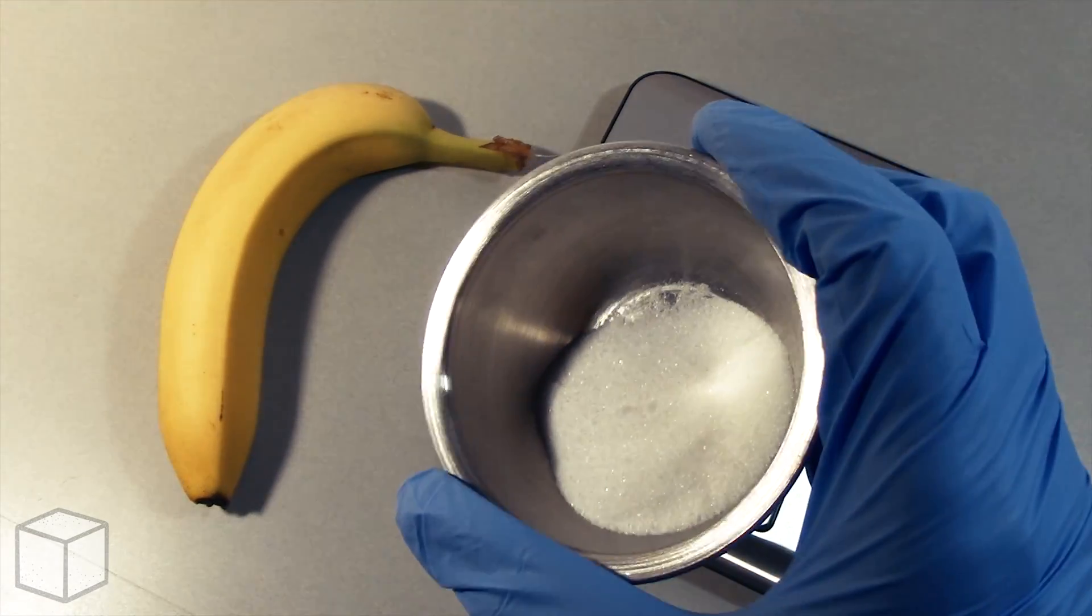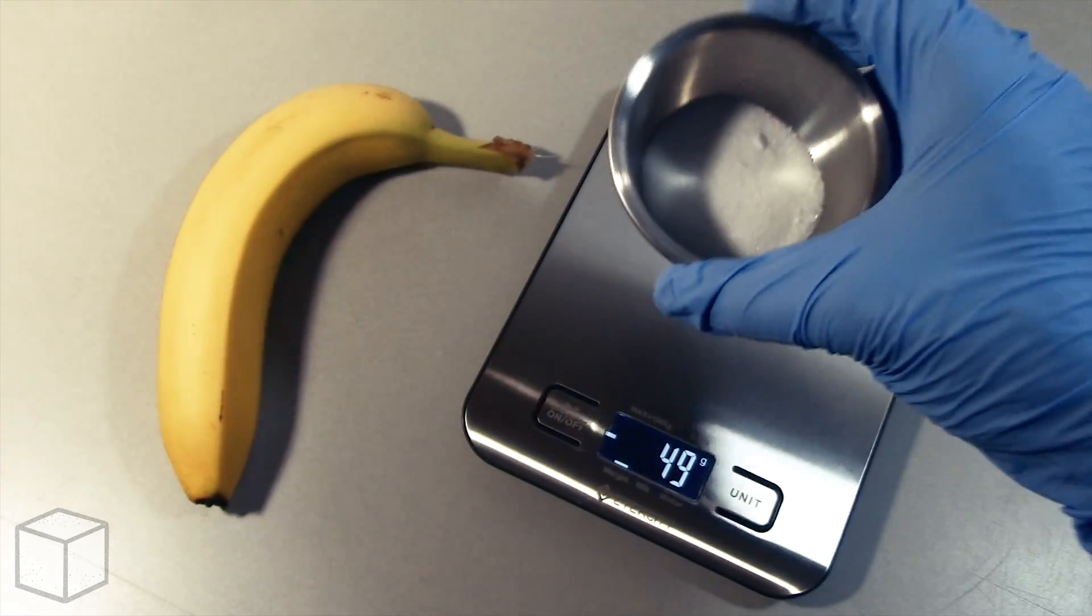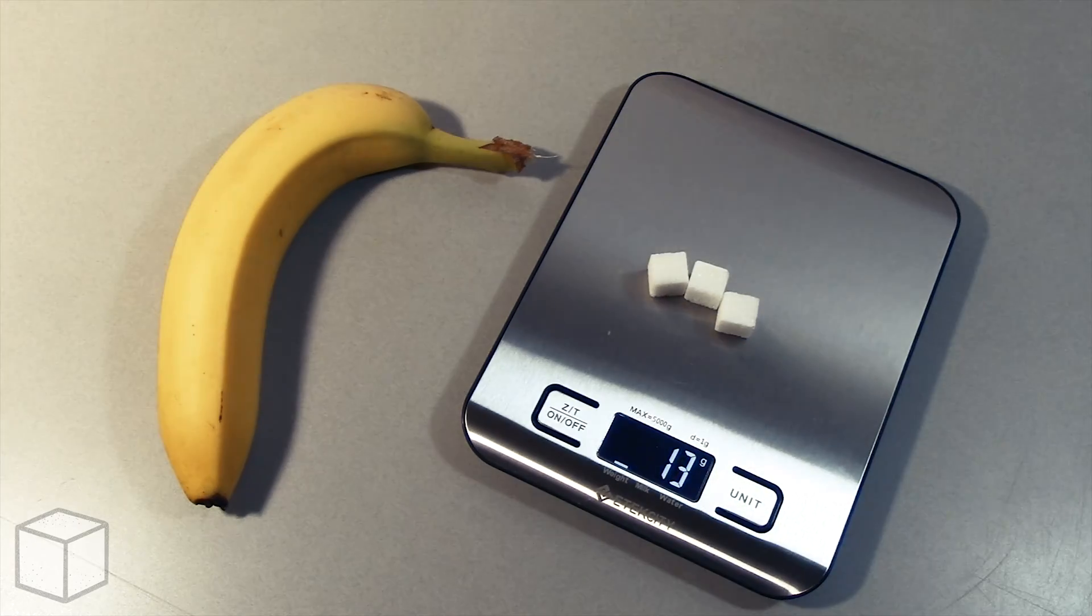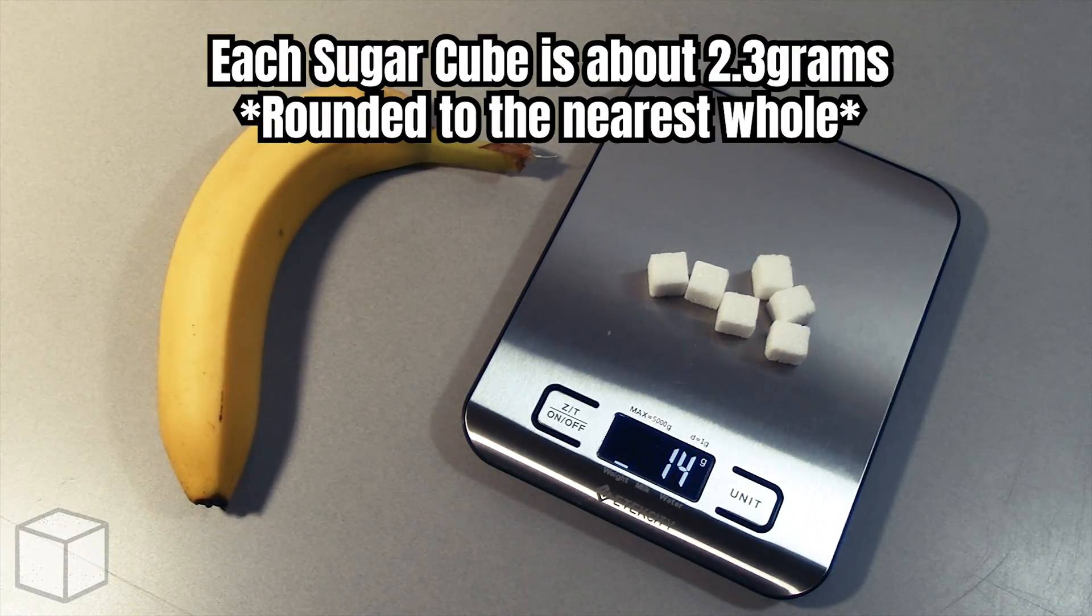Here's what 14 grams of sugar looks like in the bowl up close. And now I'll show you the equivalence of this with sugar cubes. Each cube is about 2.3 grams.